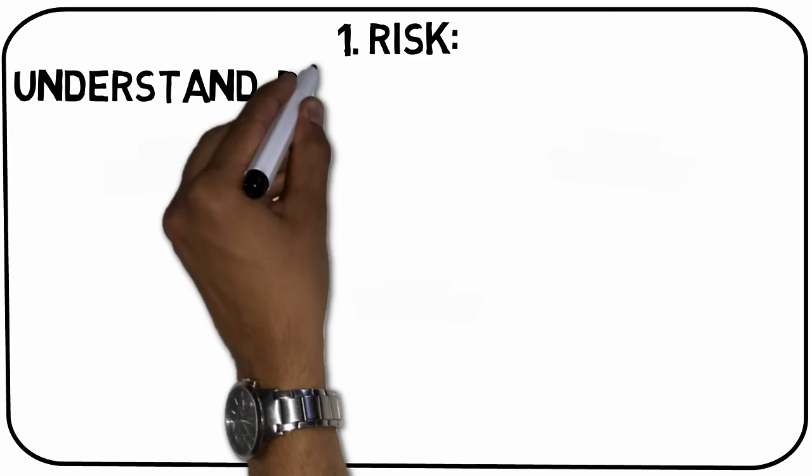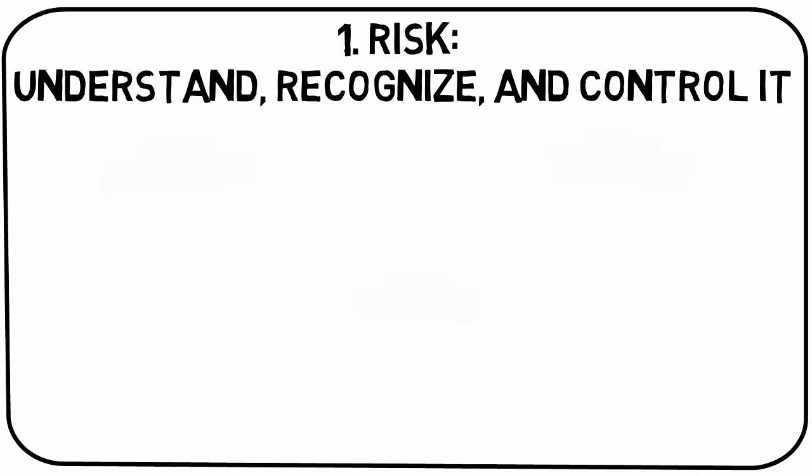Takeaway number one: Risk. Understand, recognize and control it. Howard allocates three chapters to risk and divides it into 1) Understanding risk, 2) Recognizing risk, and 3) Controlling risk. Let's start with the first one.